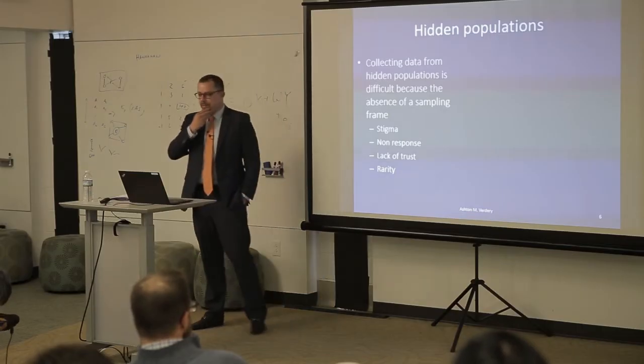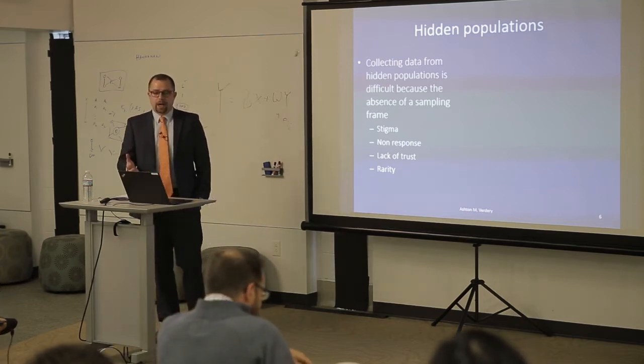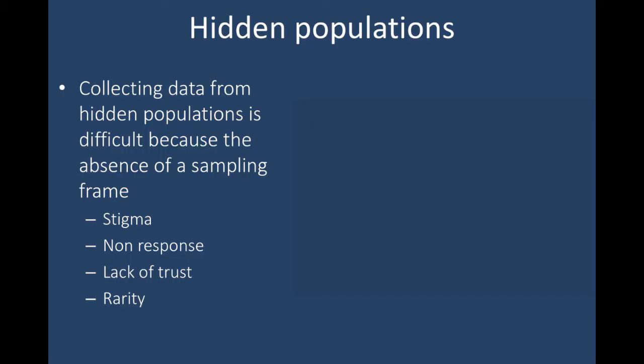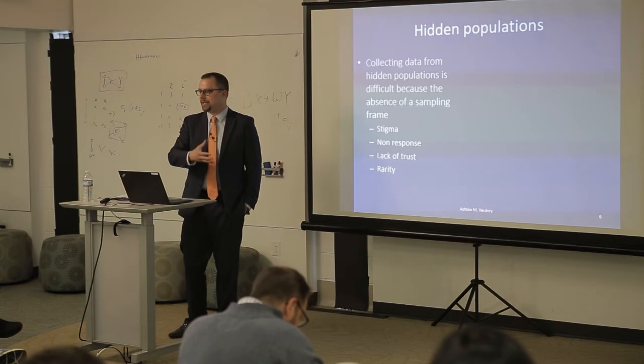These populations are often unwilling because they face a lot of stigma. Men who have sex with men in many parts of the world face enormous stigma and are unwilling to participate in surveys. They might not trust the researchers themselves — if you went in with a suit and tie and said you're from the government, they're not willing to do that. Lastly, there's the issue of rarity, where these populations are sometimes very rare as a fraction of the overall population, so it's inefficient to take a random sample and pare down to just the individuals you're focused on.